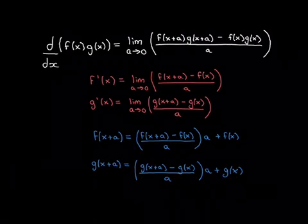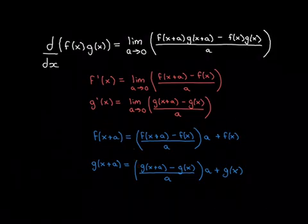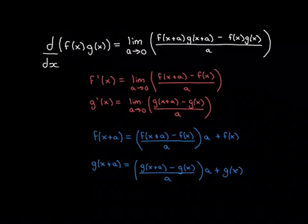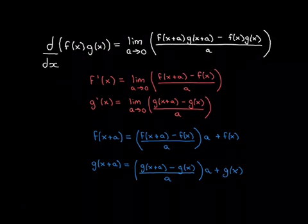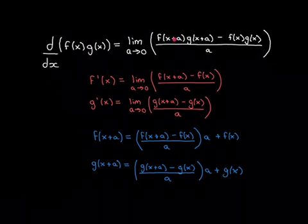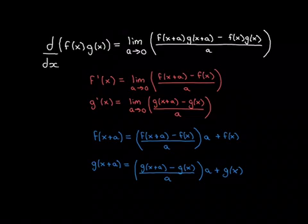We can rewrite f(x+a) in a clever way. We write [f(x+a) − f(x)] / a, multiply that by a — which cancels — and then add back f(x), giving us f(x+a) again. It looks like we've turned something simple into something complicated that cancels down anyway, but it's clever because we've now embedded the derivative structure inside the expression, which we desperately want inside the limit.